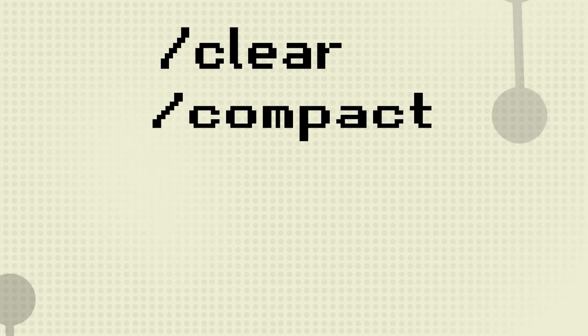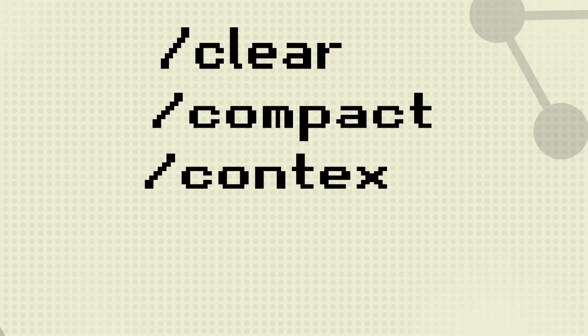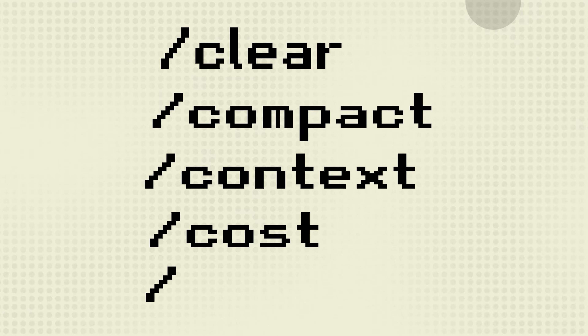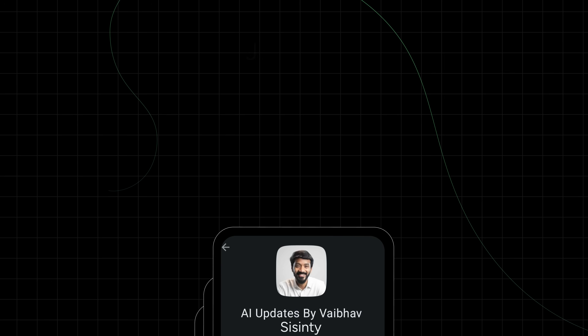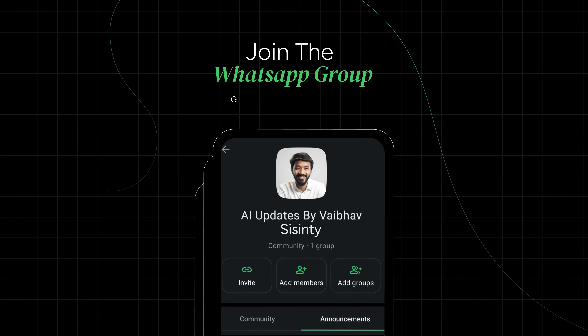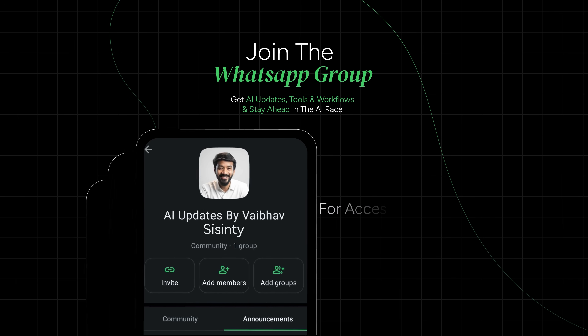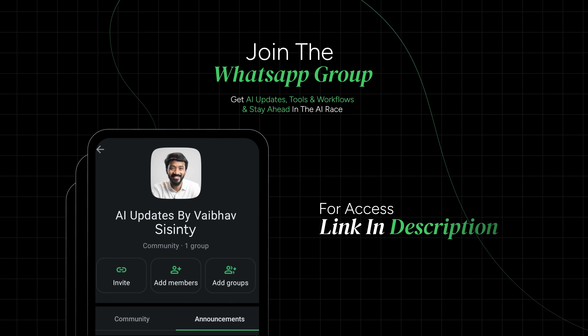Now there are a lot more commands available: slash clear, slash compact, slash context, slash cost, slash resume, and others. I've put together a complete command cheat sheet — I'm sharing it in my WhatsApp community, link is in the description. But for building what we're building today, you only need three commands. I'll teach you each one as we go.